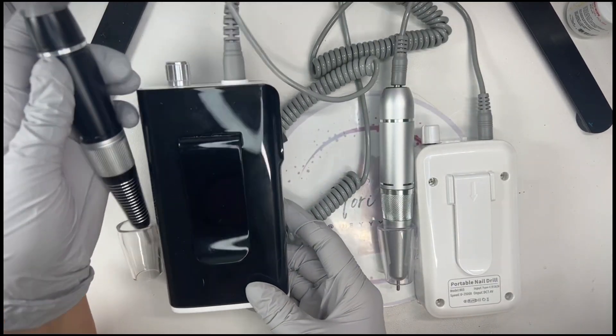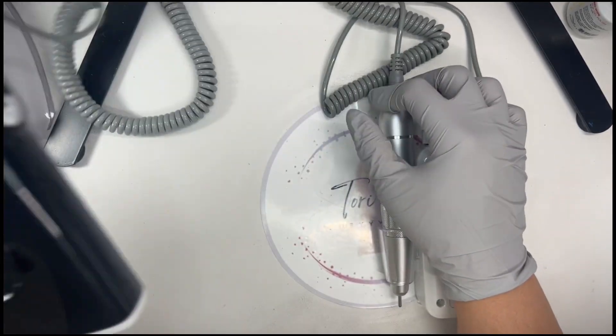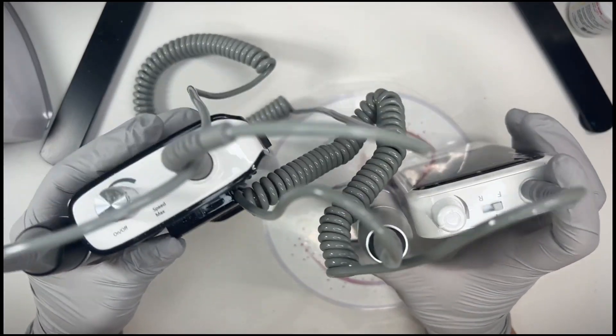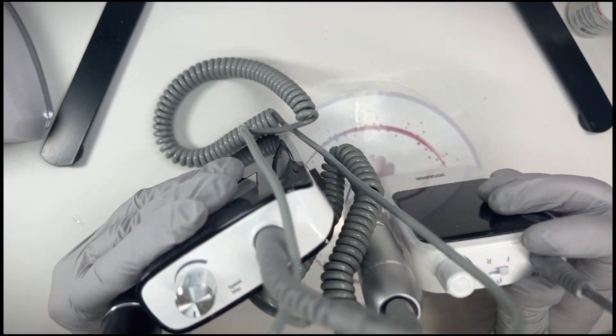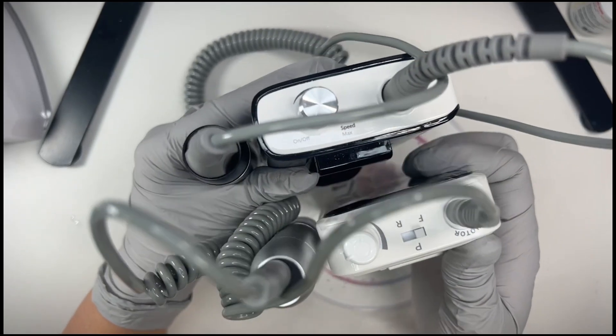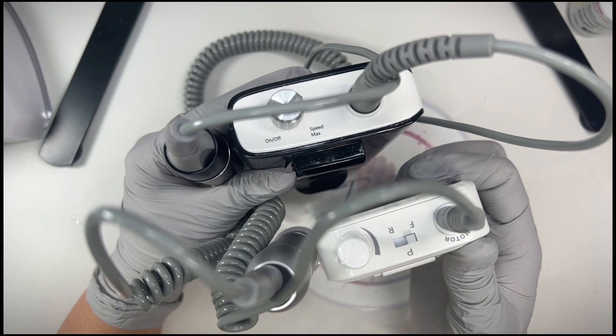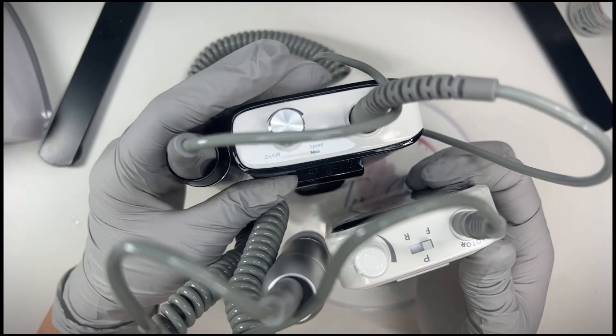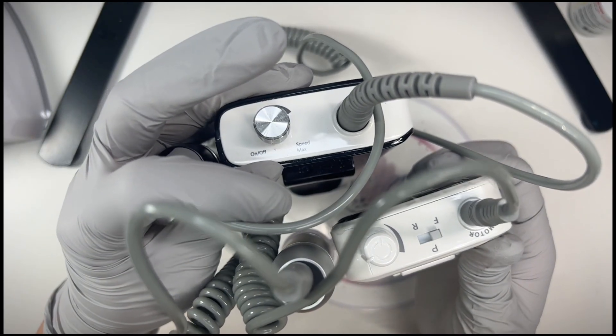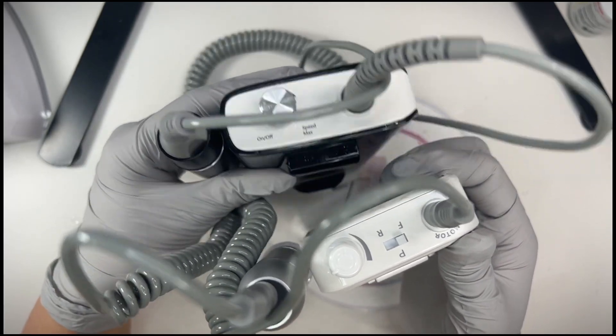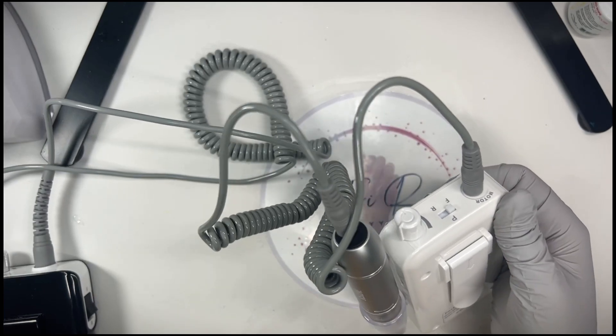As far as the hand pieces go, Joss Love's hand piece does have a little bit more weight to it. And both of these drills I believe are about the same price. You can find them both on Amazon and they both go to 35,000 rpms if I'm not mistaken, so they're relatively comparable. But I definitely like the Joss Love drill better.